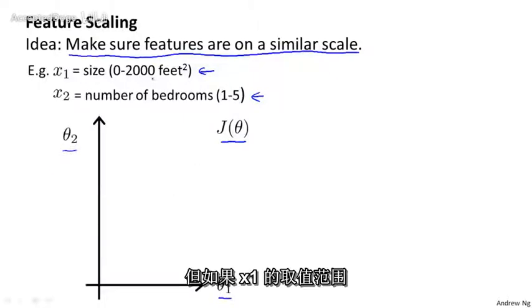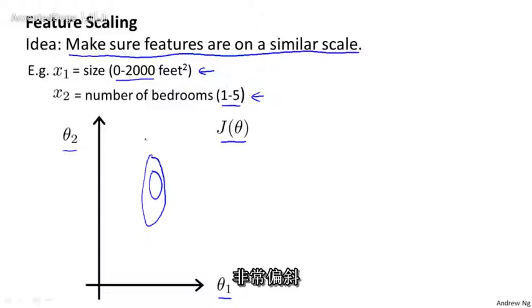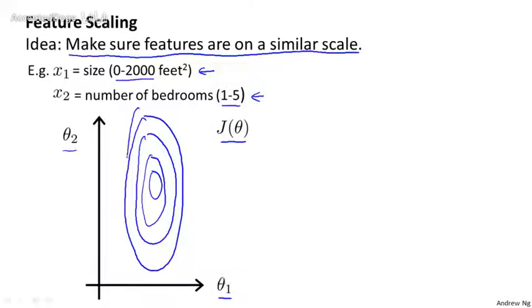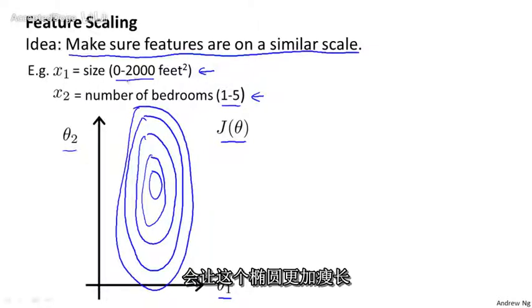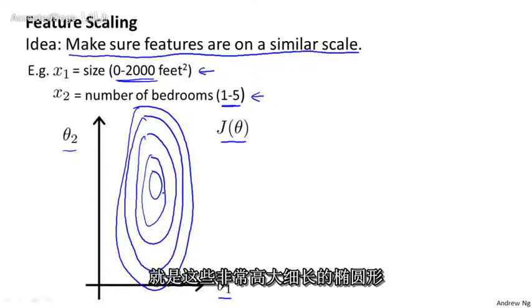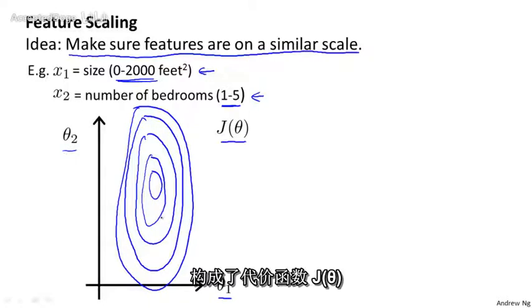But if x1 can take on a much larger range of values than x2, it turns out that the contours of the cost function J(θ) can take on this sort of very skewed elliptical shape. With a 2,000 to 5 ratio, it can be even more skewed. So these very tall and skinny ellipses can form the contours of the cost function.